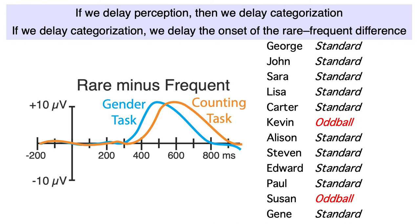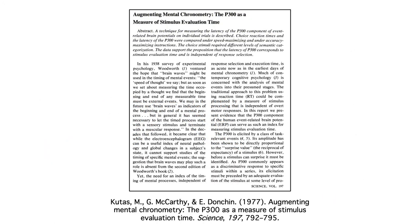All of this is logically true, but it's also empirically true. Many studies from the Donchin lab in the 70s and 80s showed that the latency of the P3 wave depends on what they called stimulus evaluation time, which is the amount of time required to perceive and categorize a stimulus.